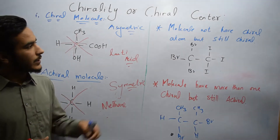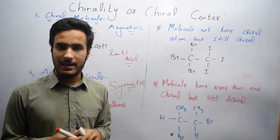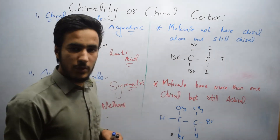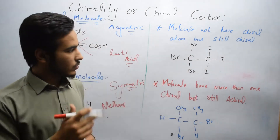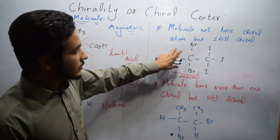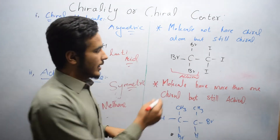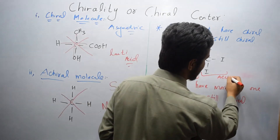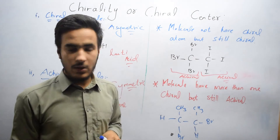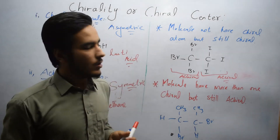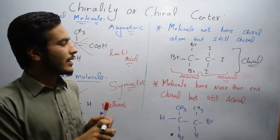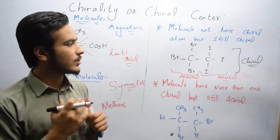An important point to note is that some molecules do not have a chiral atom but are still chiral. For example, consider a molecule with two carbons where three bromines are attached to one carbon and three iodines to the other. Each carbon is achiral because three identical atoms are attached. Yet the whole molecule is still chiral because it cannot be divided into two equal parts.